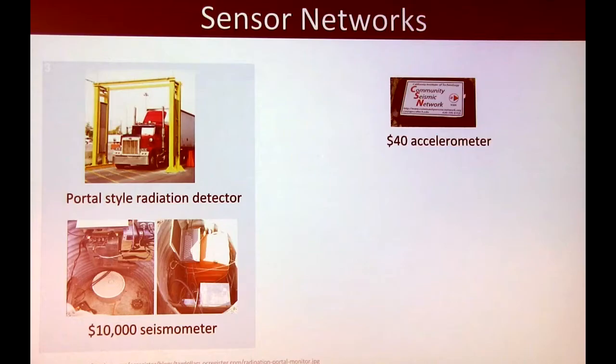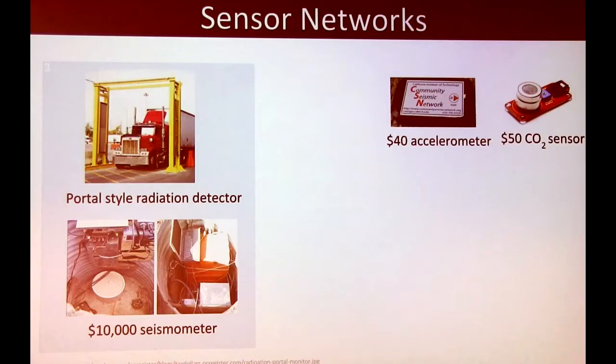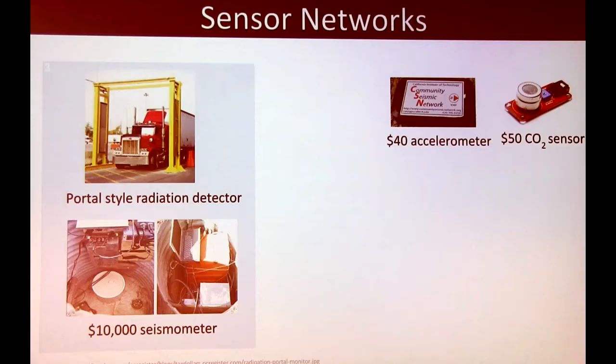To solve some of that, we look at cheap sensors — such as a $40 accelerometer that can perform some of the same functions as a seismometer, though not with the same accuracy. Part of our work is determining to what extent we can fuse information from a $40 accelerometer to approximate what a $10,000 seismometer would do. We also have CO2 sensors and other gas sensors to detect air pollution, and a cheap Geiger counter that can be hooked up to a phone for detecting radiation from dirty bombs and other events.